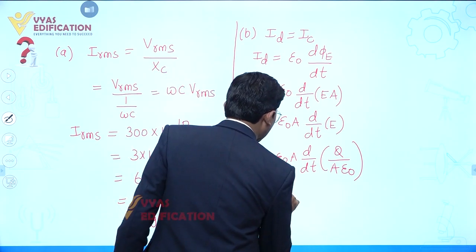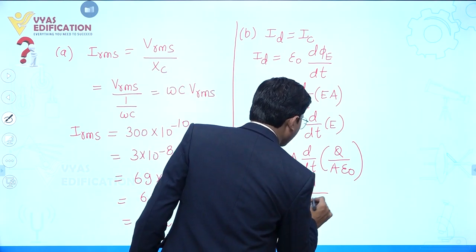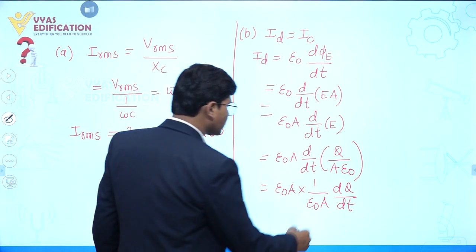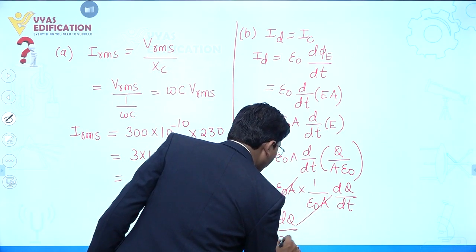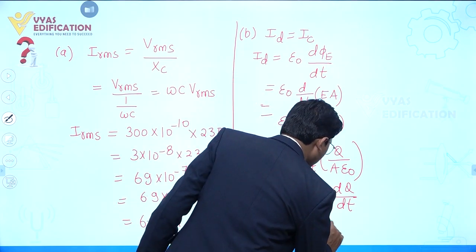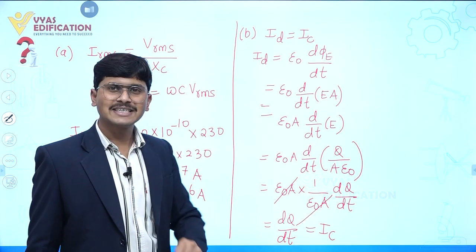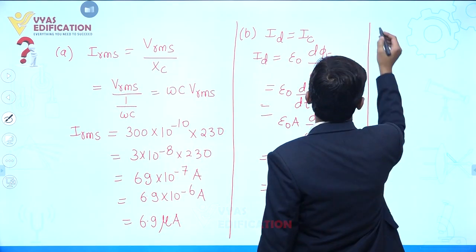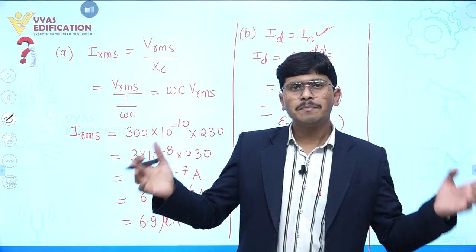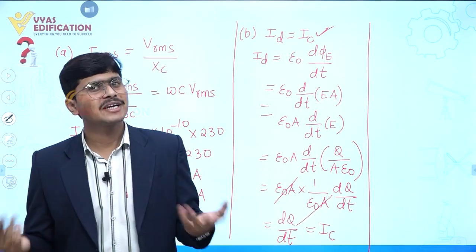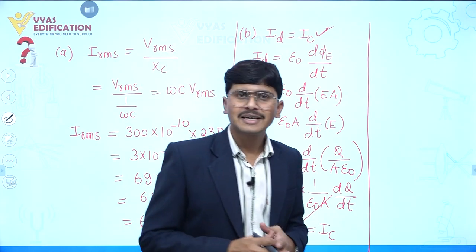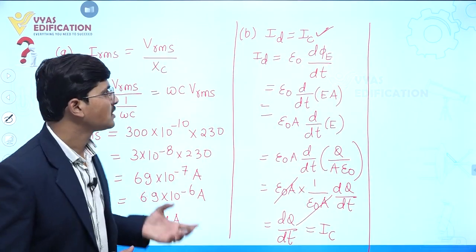From here we can see that ε₀ and A cancel out, giving I_d = dQ/dt, which is the rate of flow of electric charges — and this is equal to conduction current. So conduction current equals displacement current. Outside the parallel plate capacitor we have only conduction current and displacement current is zero; between the plates we have displacement current and conduction current is zero. Magnitude-wise, both are the same.